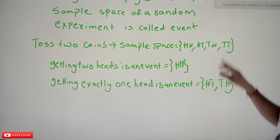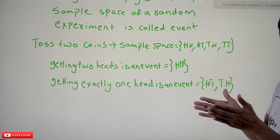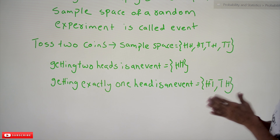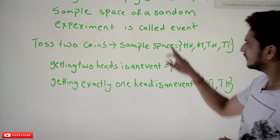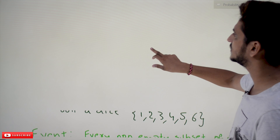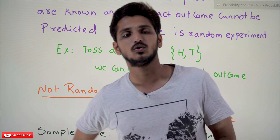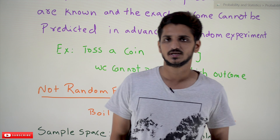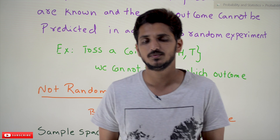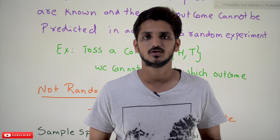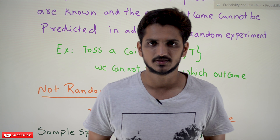So from the sample space, the non-empty subsets of the sample space we call events. If you understand these definitions it is very easy to understand the remaining concepts we are going to discuss in our coming classes. Hope you understand the concept. If you have any questions, please post them in the comment section below. Thanks for watching. If you haven't subscribed to our channel, please subscribe and press the bell icon for the latest updates. Thank you.